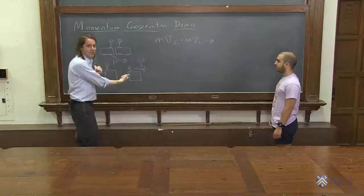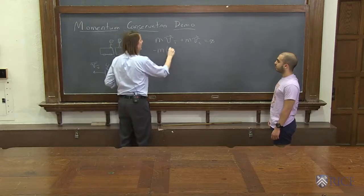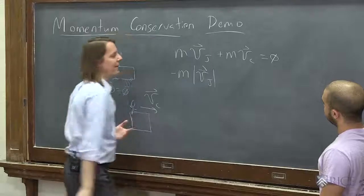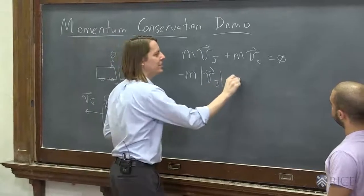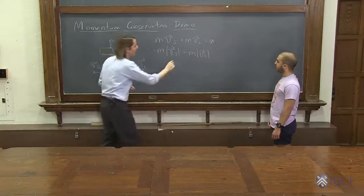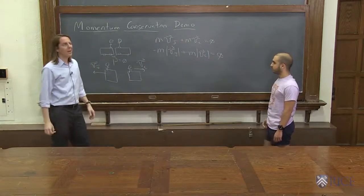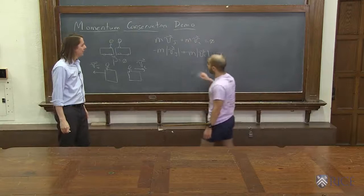But right, since they're opposite directions, if you did it in 1D, you would think of one as negative. You could say minus m, the magnitude of my velocity, if I call me the negative direction, plus the magnitude of Sina's velocity, if you call him the positive direction, would be equal to zero. Yes, that's because momentum adds as a vector, right?